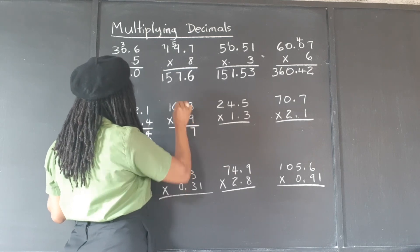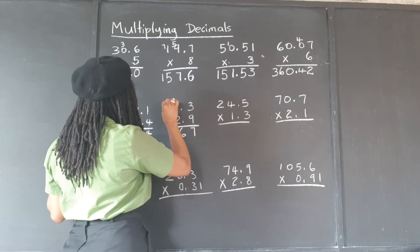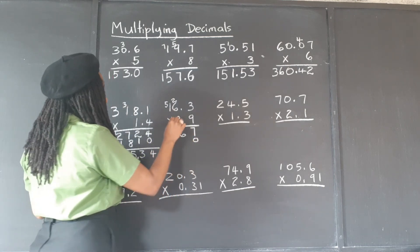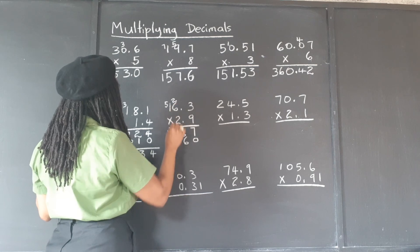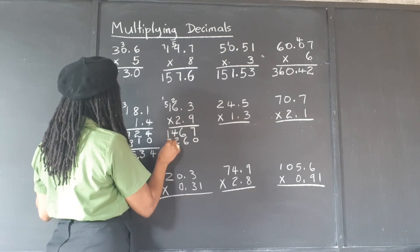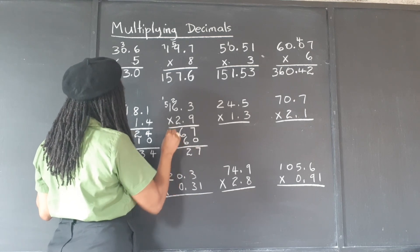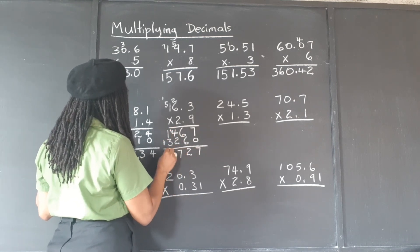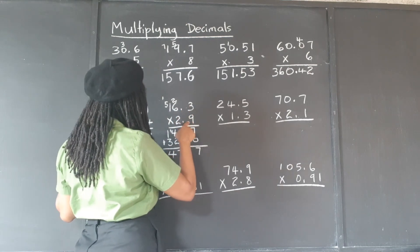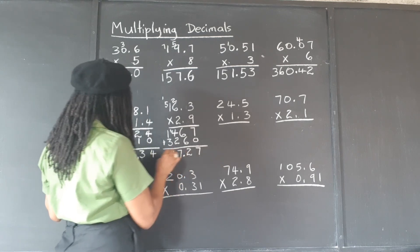9 times 3 is 27. 9 times 6 is 54, plus 2 is 56. 9 times 1 is 9, plus 5 is 14. 9 times 1 is 15. Put our placeholder. 2 times 3 is 6. 2 times 6 is 12. 2 times 1 is 2, plus 1 is 3. Now we add: that gives us 7, then 12, then carry. 4 and 2 gives 6, plus 1 is 7. 3 and 1 is 4. We have 1 decimal place from one number and 2 from the other — that's 2 in all. 1, 2 — and we put our decimal point there.